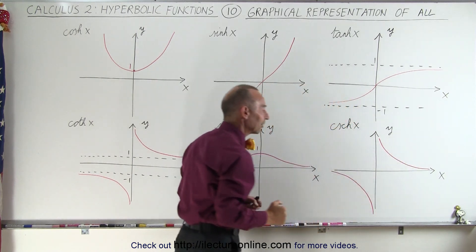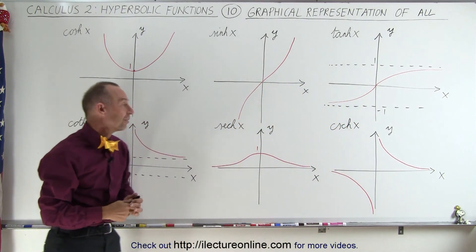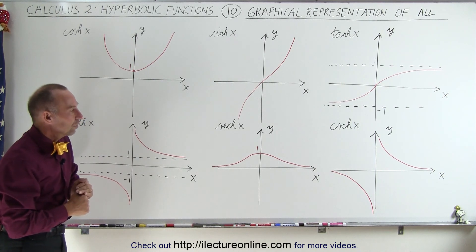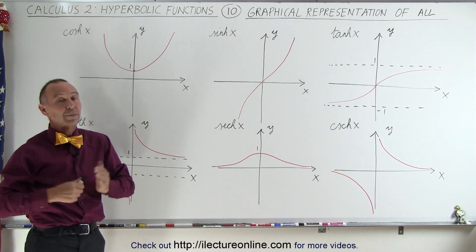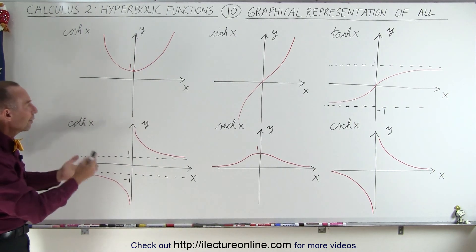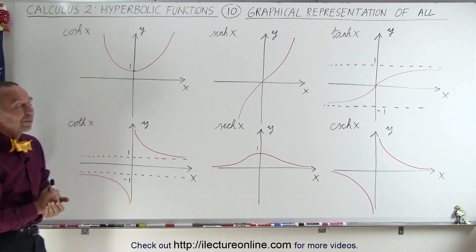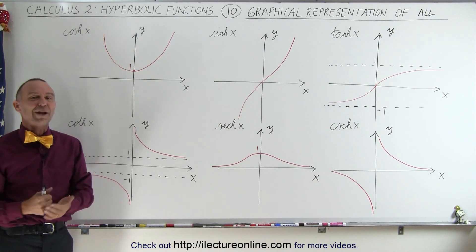So it does make sense that the hyperbolic secant and the hyperbolic cosecant do look the way they do, but here's a nice summary and a reference for all six hyperbolic functions and how they're graphed.